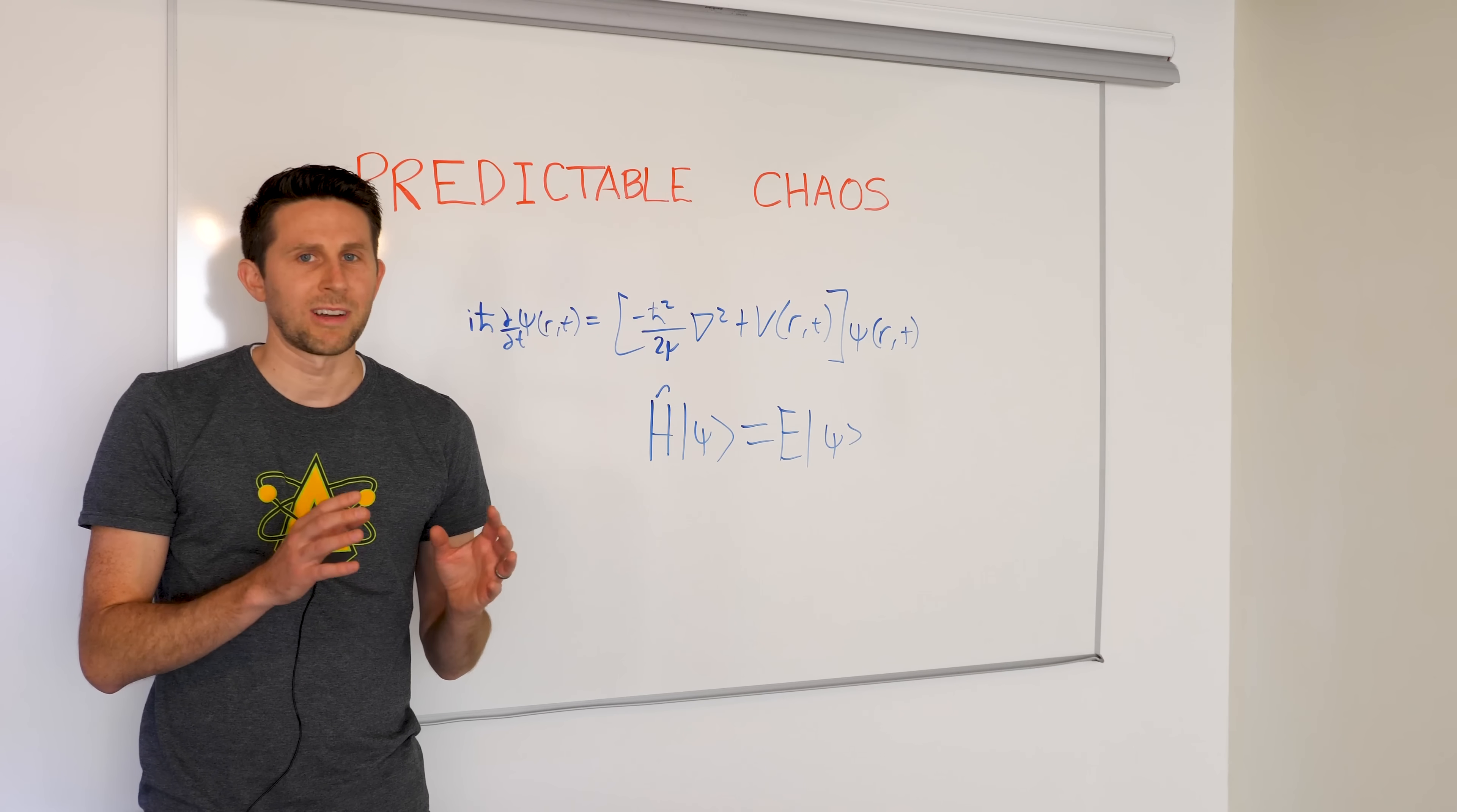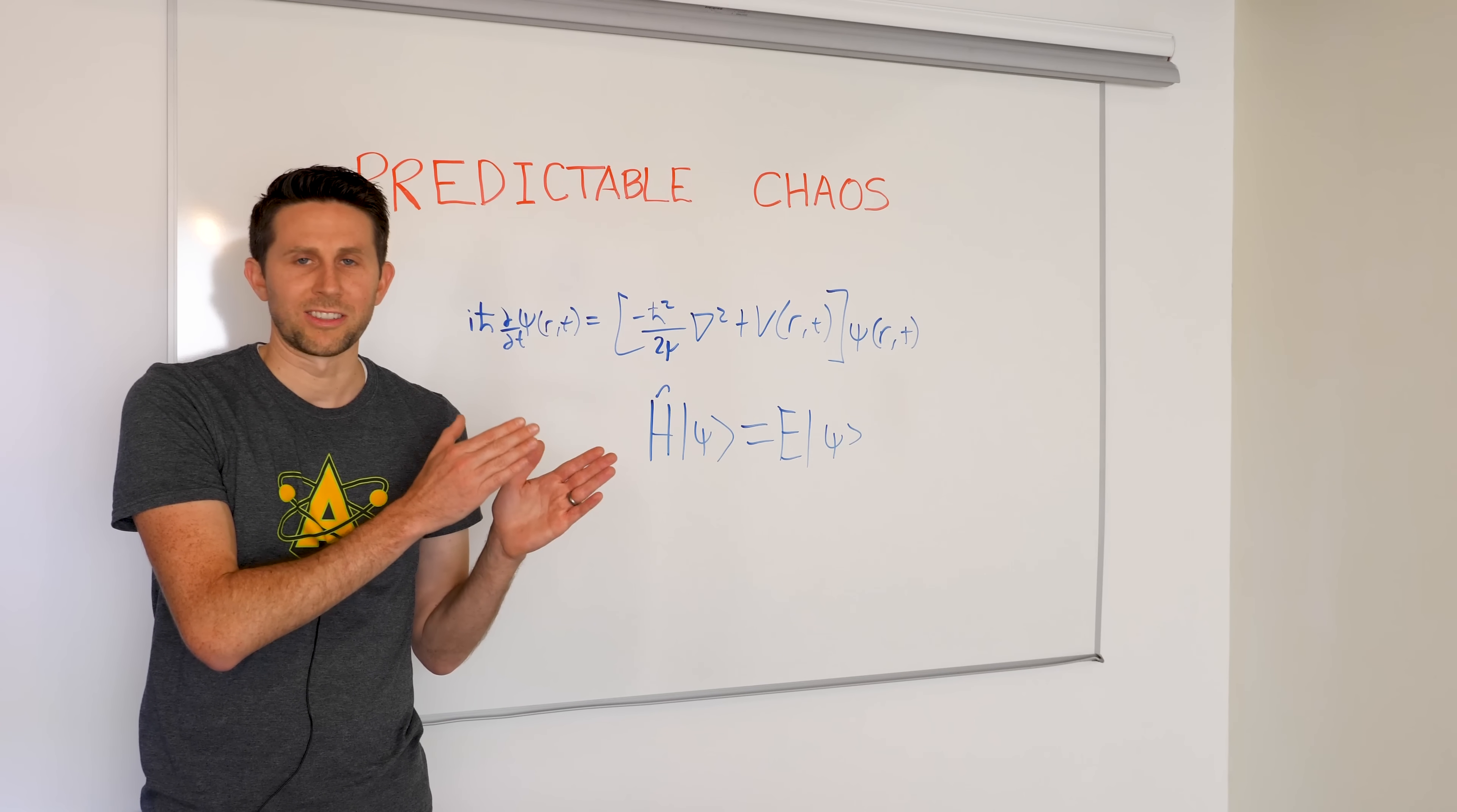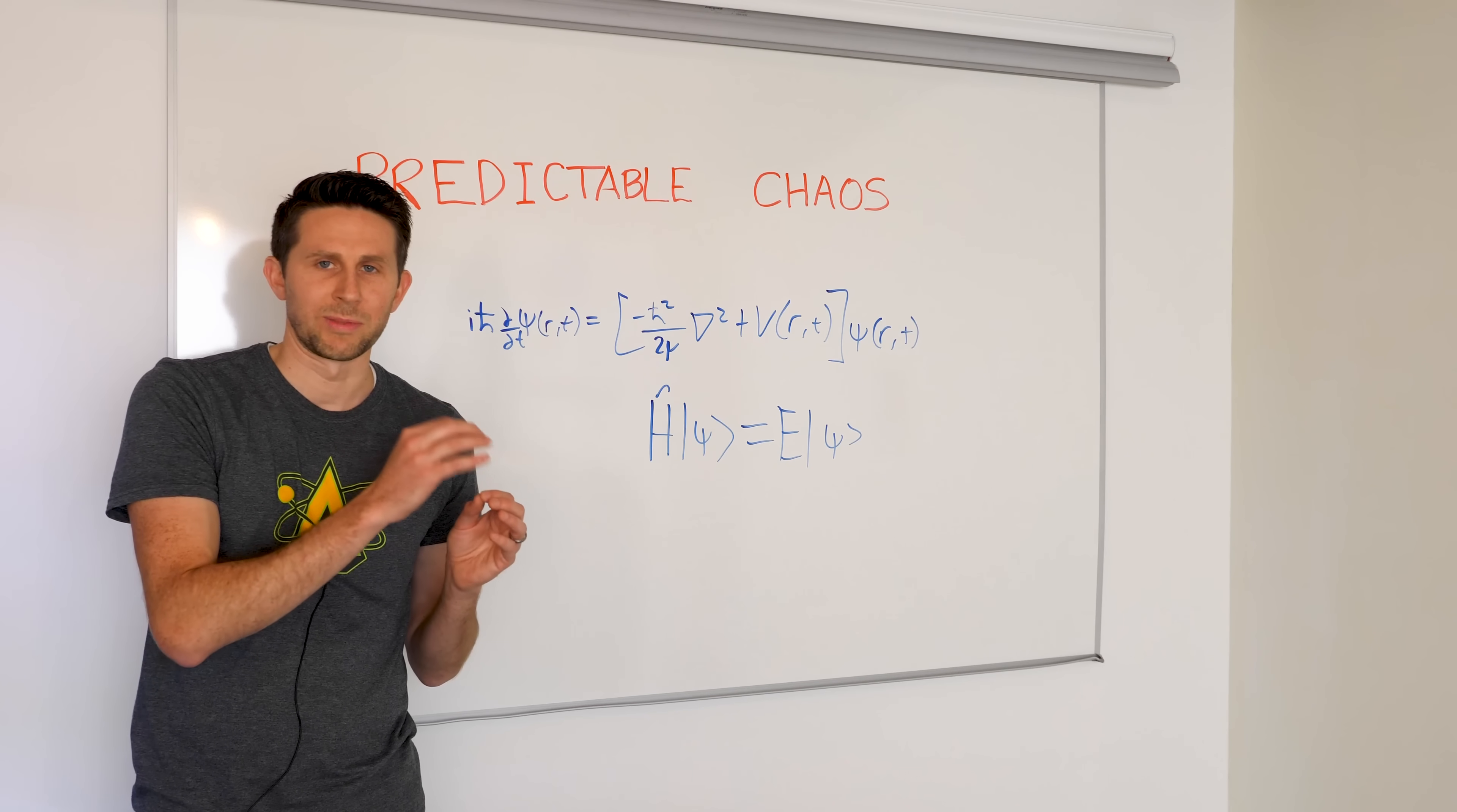And so I've defined chaos and randomness in two different ways. Chaos is deterministic, meaning that if you knew everything about the initial conditions, you could predict what will happen in the future. Whereas randomness is completely unpredictable. You can never predict what will happen to a specific thing.